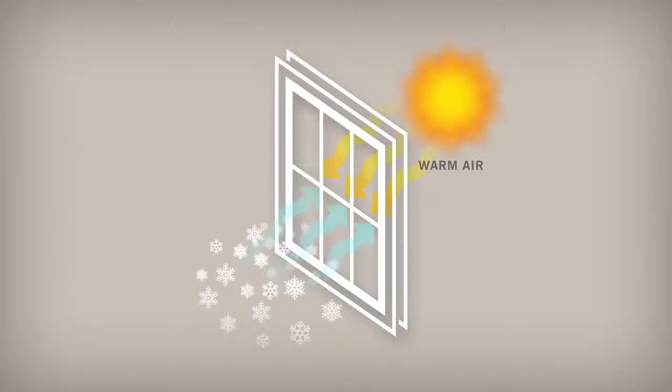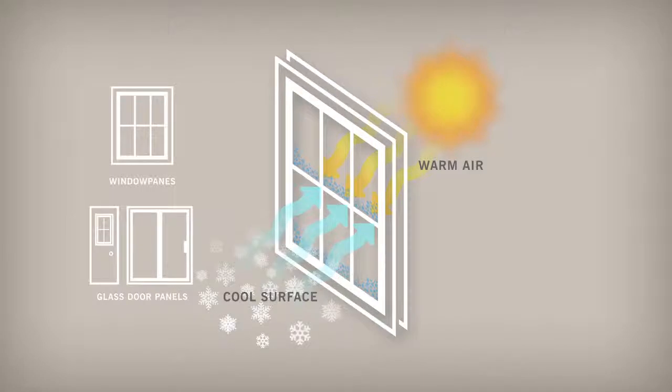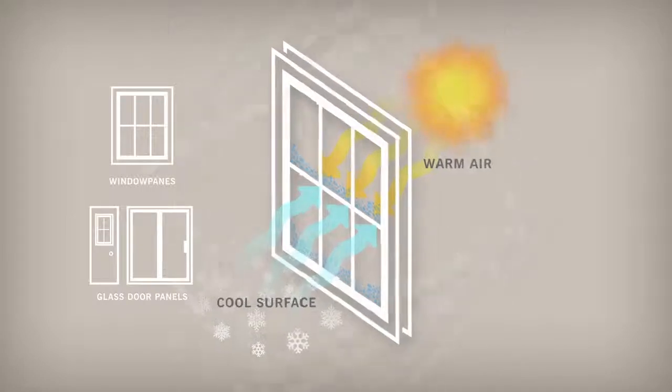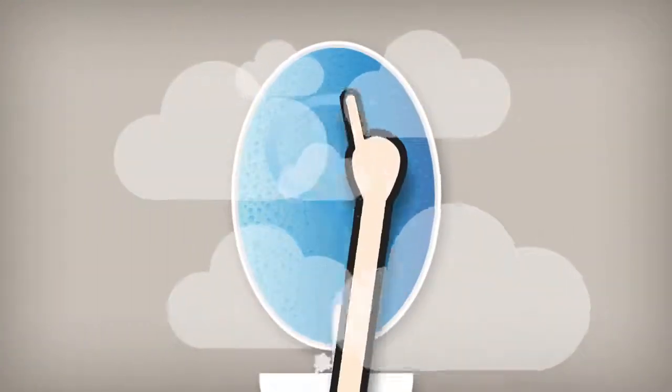Condensation forms when warm or humid air comes into contact with cooler surfaces such as window panes or glass door panels. When warm air inside your house comes in contact with a cool window, the water vapor in the air turns to liquid as it cools. That liquid is what you see on your windows. It's the same reason that glasses sweat and bathroom mirrors fog up when you take a hot shower.